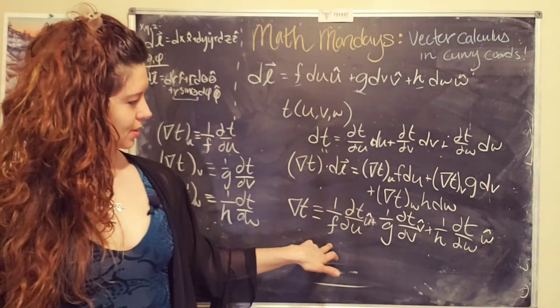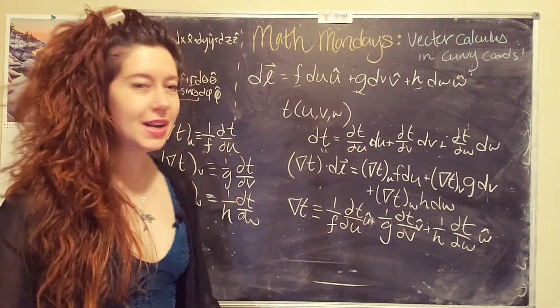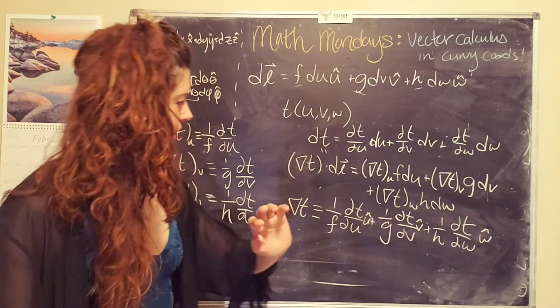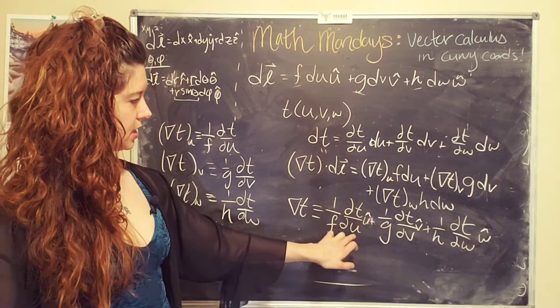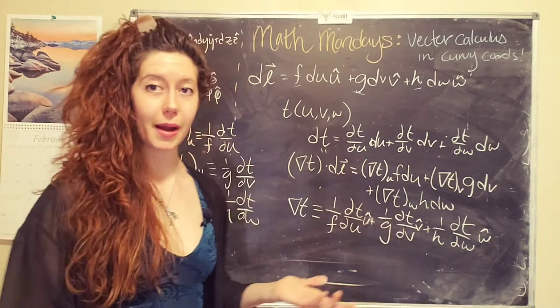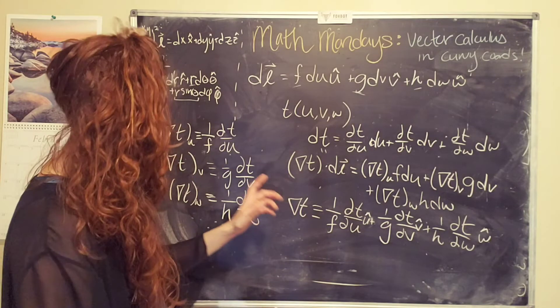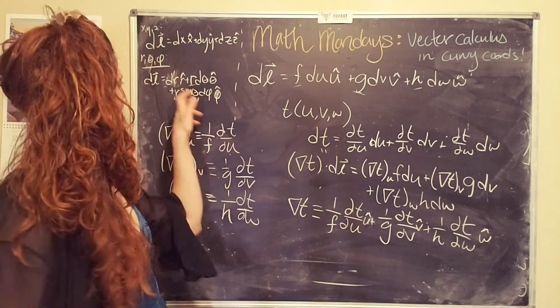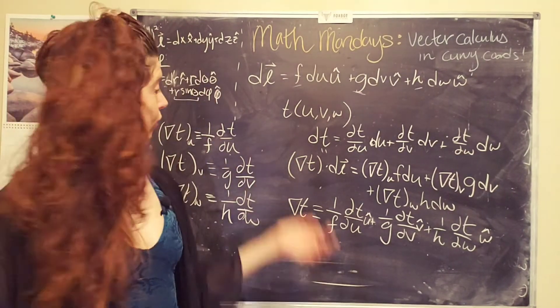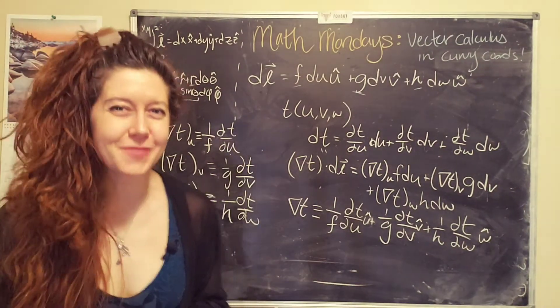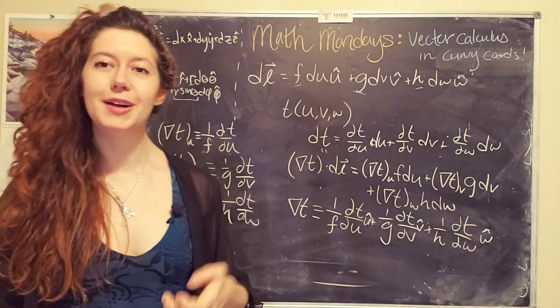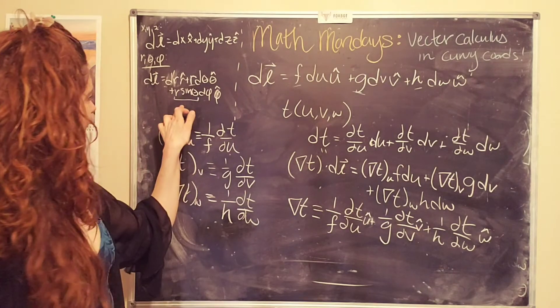And so now, this is where f, g, and h pop in, and so if this was just our Cartesian coordinate system, these are all 1, this becomes dt dx in x-hat, dt dy in the y-hat, and dt dz in the w-hat. And if we're in spherical, then we just replace f with 1, that's pretty straightforward, 1 over g becomes 1 over r, because g equals r, and 1 over h becomes 1 over r sine theta, because that's what h is.